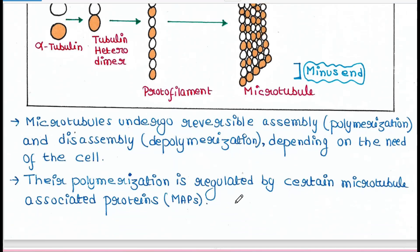Their polymerization is regulated by certain MAPs. MAPs are microtubule-associated proteins. So these MAPs will regulate how they will assemble.